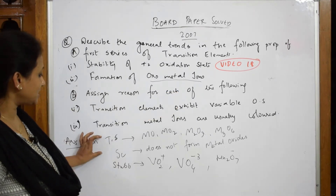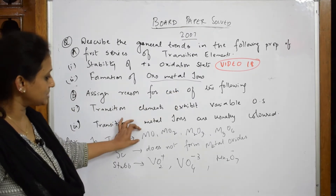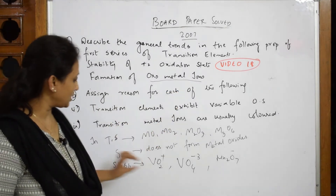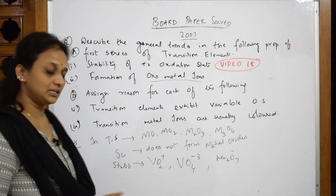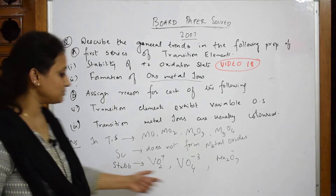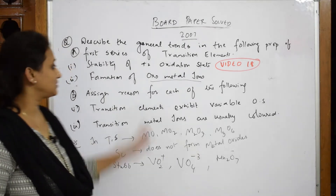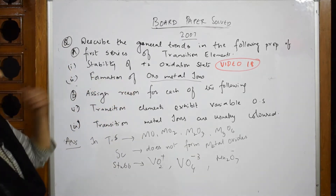So you can write: transition elements — general form, transition elements — anomaly, transition elements — stable forms. That completes your answer.